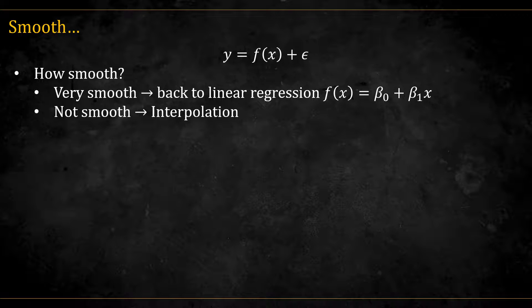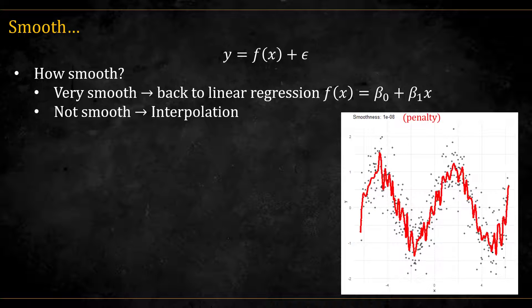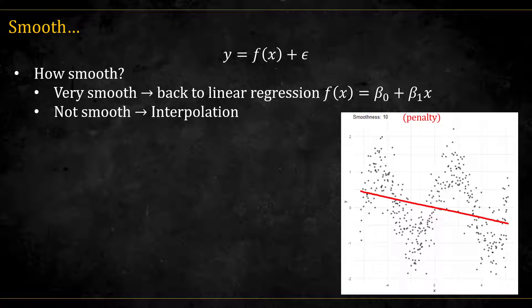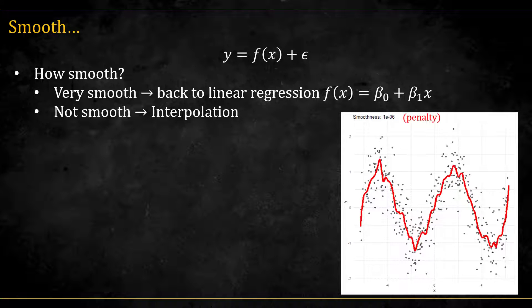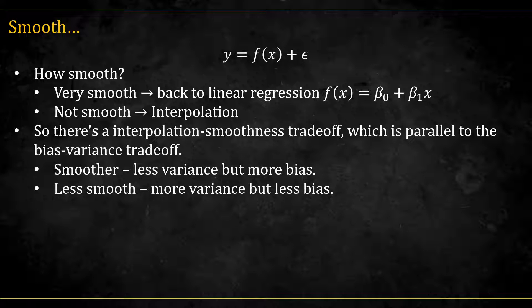If we want a very smooth function, we will go back to using a linear regression. On the other extreme, if we don't mind wiggling around, we will end up with a perfect interpolation of the data. So there is an inherent trade-off between interpolation and smoothness, which is exactly parallel to the bias-variance trade-off.